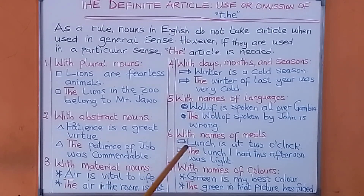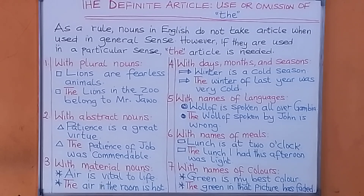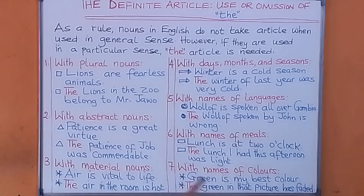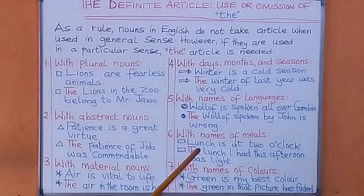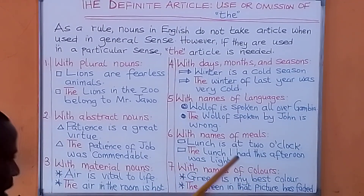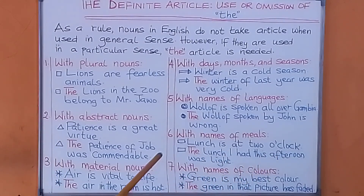Number six: with names of meals — dinner, breakfast, lunch. If we use them in a general sense, we don't need an article: 'Lunch is at 2 o'clock.' 'Breakfast is at 8 o'clock.' 'Dinner is at 9 o'clock.' But if we want to use a meal in a particular sense, we say: 'The lunch I had this afternoon was light.' 'The breakfast I took this morning was heavy.' 'The dinner I will take tonight will be light.' We are using that meal in a particular sense.